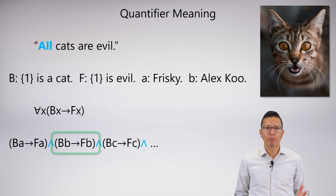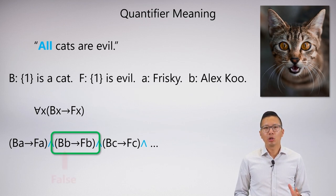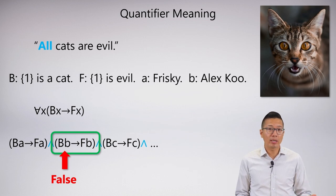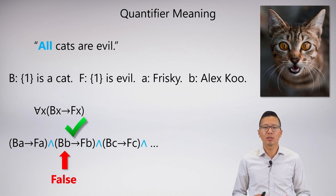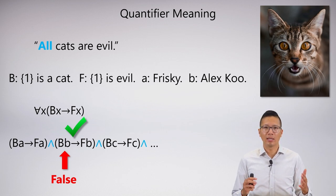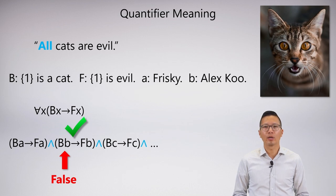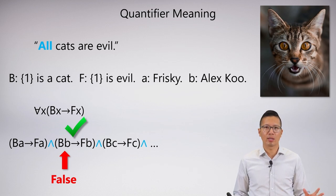You might look at this and think: wait, there's a problem. Look at this one — it says 'if Alex Koo is a cat, then Alex Koo is evil,' but Alex Koo is not a cat. How can this be true? Well, it's actually not difficult to figure out. You just need to remember that if the antecedent of a conditional is false, that conditional is true on its own. So there's nothing wrong here. The substitution instances all work because if you substitute something that's not a cat, you get a true statement. But if you substitute something that is a cat, it must be evil because all cats are evil — and you still get a true statement. That's why the universal just makes sense with a conditional statement.